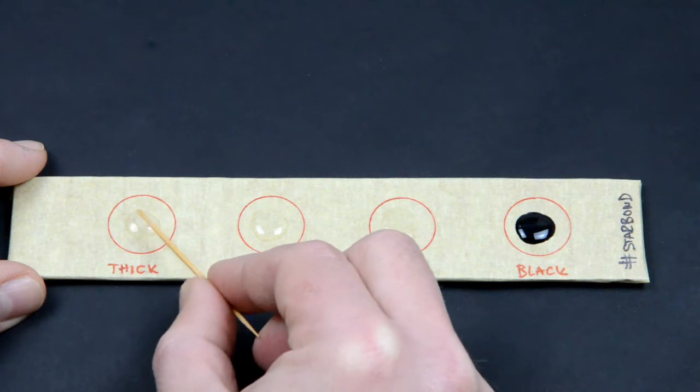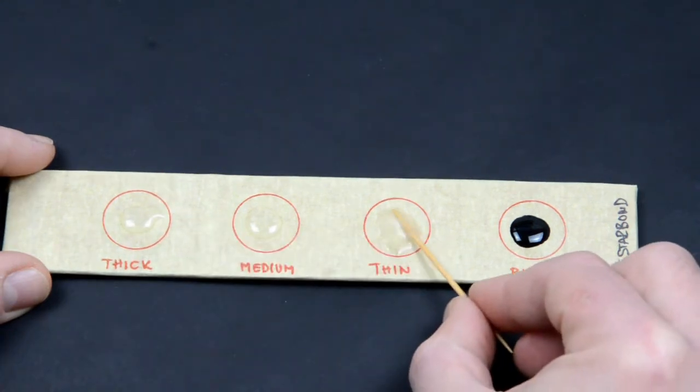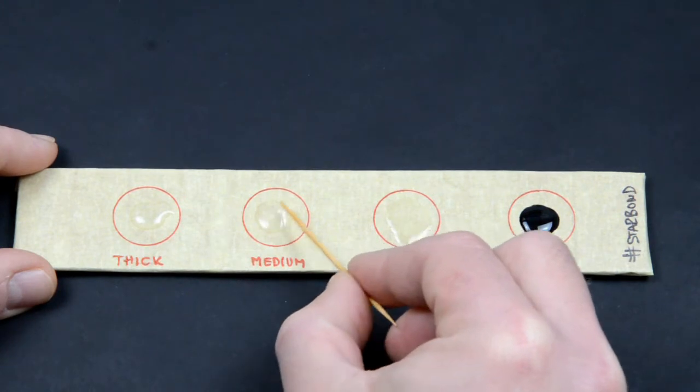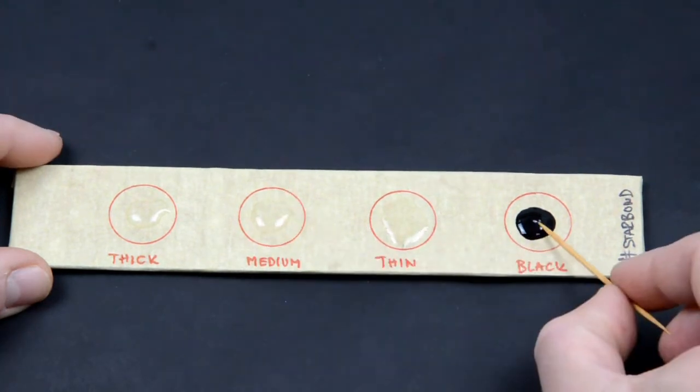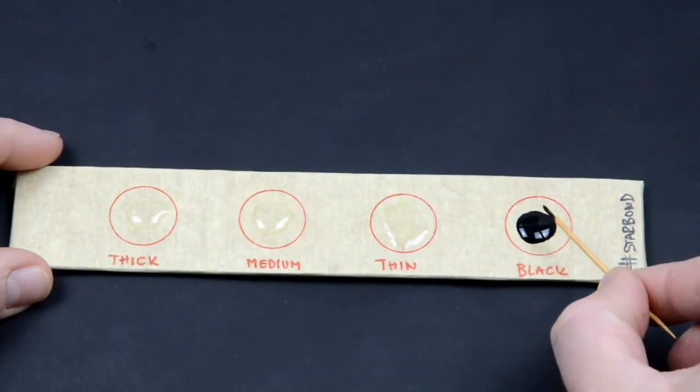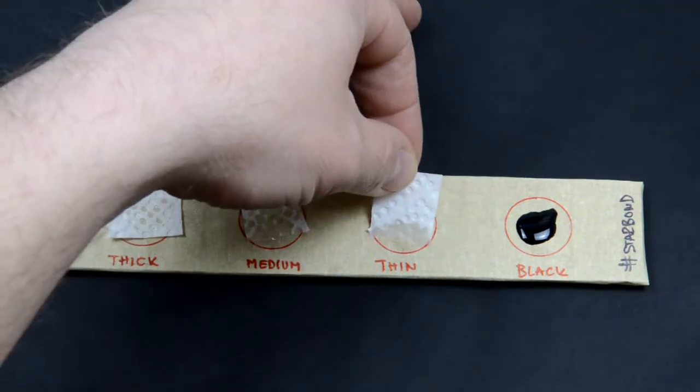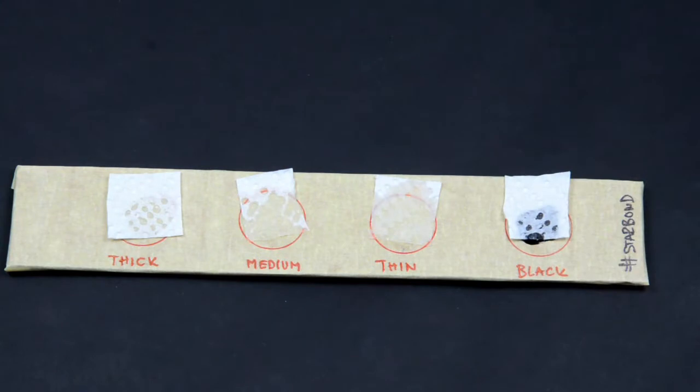So thick is very dense, like a gel, and thin is almost like water. Medium is a sweet spot between and black is dense like medium. Now I will cover them with pieces of paper towel to get you an idea how they behave.